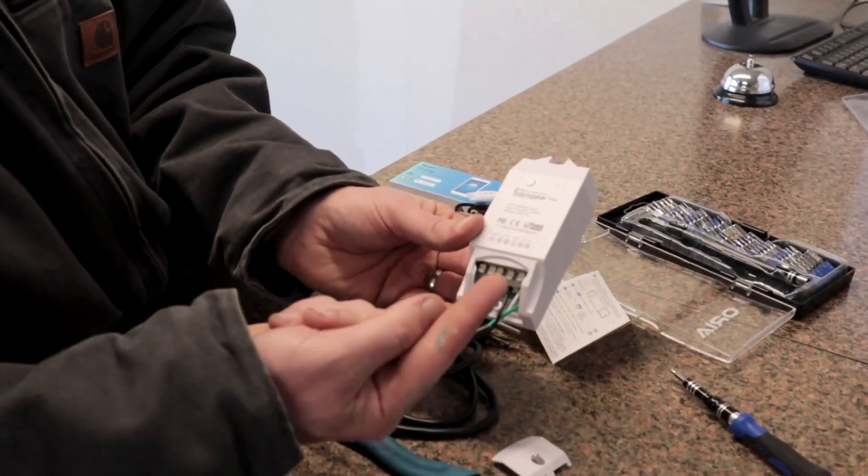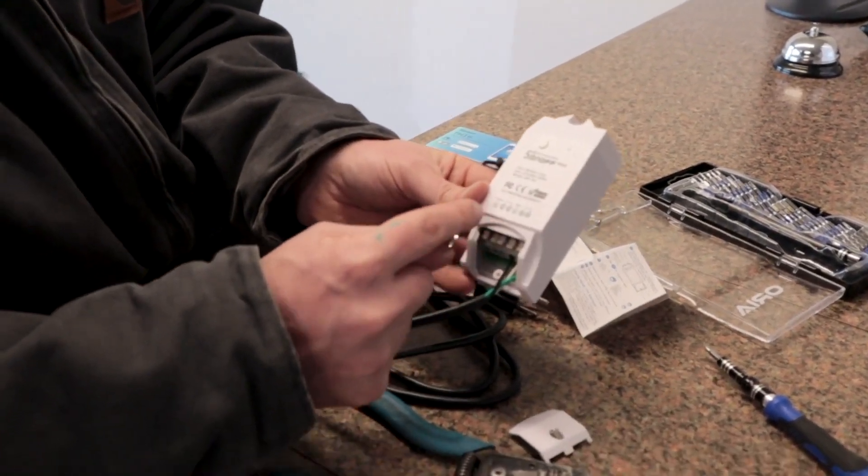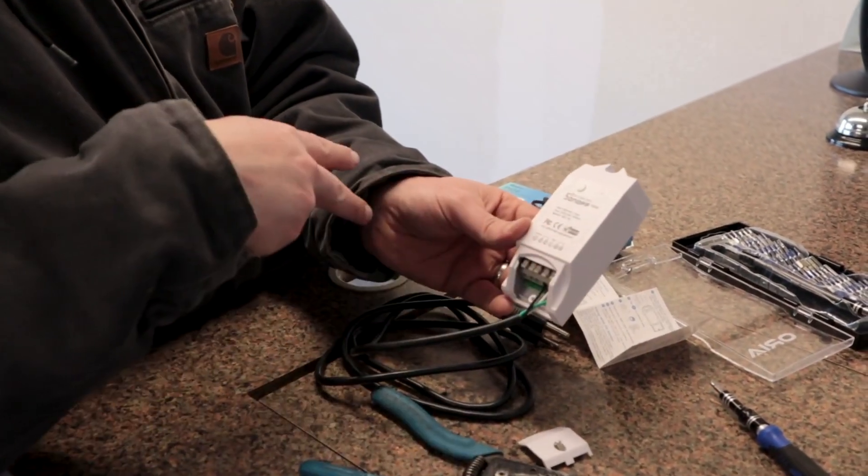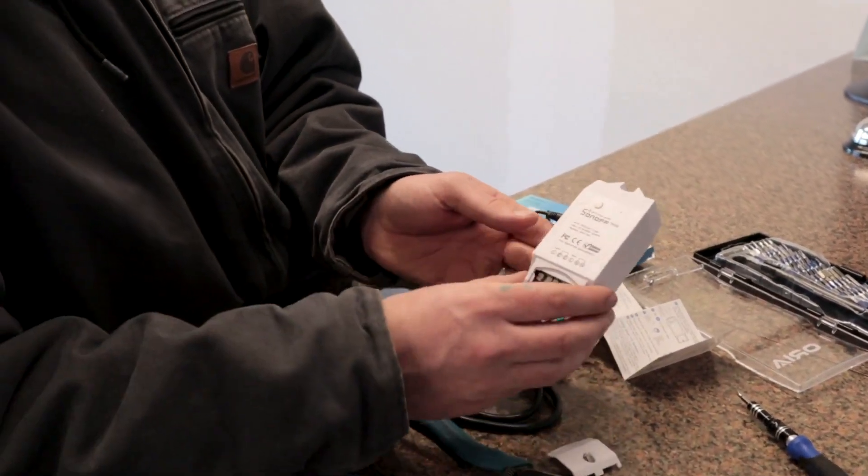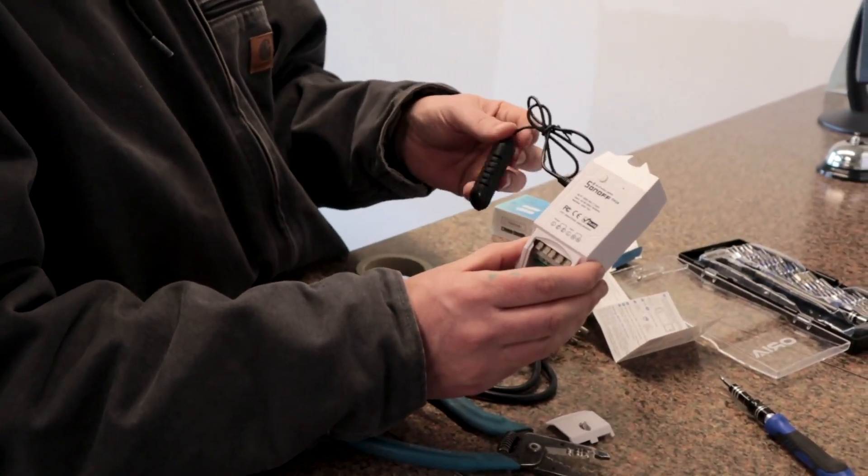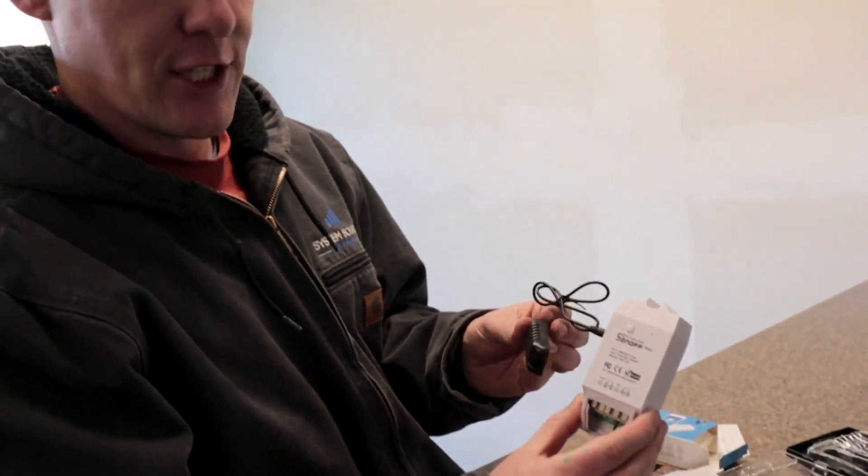And then when we get to the point where we want to switch something, we'll just put it over here on the load side. So there's also an L out and then a neutral out that we would be connecting to a fan or a heater or some sort of a device that is controlled based on the temperature and humidity. So I appreciate you watching this video and catch you on the next one.